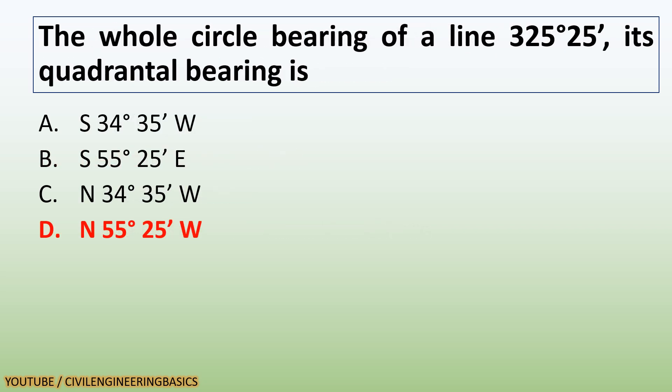The whole circle bearing of a line 325 degrees 25 minutes, its quadrantal bearing is N 55 degrees 25 minutes W.